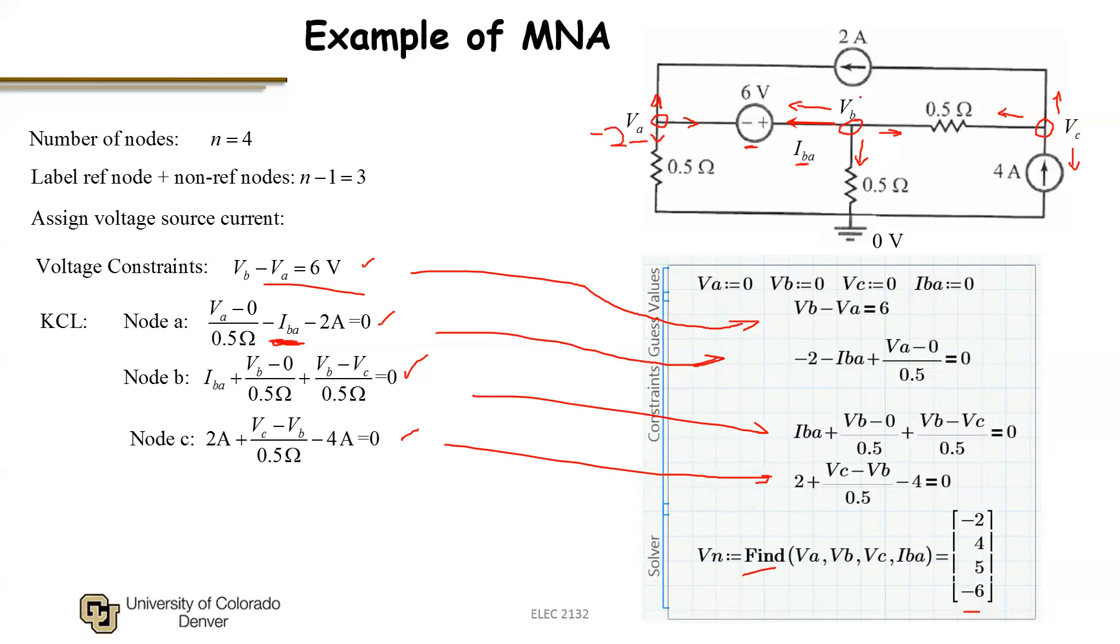And I find that V_B is 4 volts. And of course, 4 minus minus 2 gives me my 6 volt drop. V_C is 5 volts. And I find that I_BA is minus 6 amps. So of course, the current is flowing to the right. So this source, indeed, is producing power.